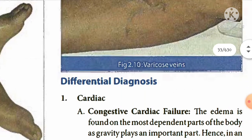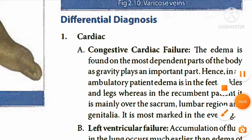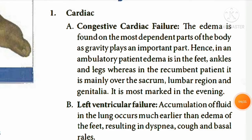Now let us look at differential diagnosis. For cardiac causes — CCF (congestive cardiac failure), LVF (left ventricular failure), and pericardial effusion. In congestive cardiac failure, edema is found on the most dependent parts of the body as gravity plays an important part. Hence in an ambulatory patient, edema is in the feet, ankles, and legs. In the recumbent patient it is mainly over the sacrum, lumbar region, and genitalia.